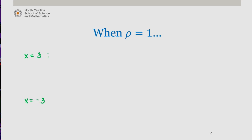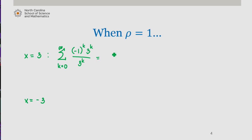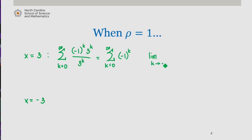When x equals 3, our series becomes the sum from k equals 0 to infinity of negative 1 to the k times 3 to the k divided by 3 to the k. This is equal to the sum from k equals 0 to infinity of negative 1 to the k. By the divergence test, since the limit as k approaches infinity of negative 1 to the k is not equal to 0, this series diverges.